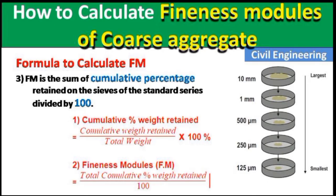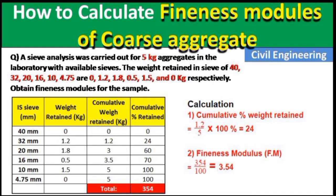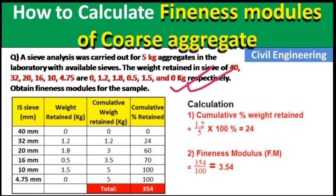Let us look at a numerical example for a clear understanding. The question states: a sieve analysis was carried out using 5 kg of aggregate in the laboratory. The available sieves are 40 mm, 32 mm, 20 mm, 16 mm, 10 mm, and 4.75 mm. The weights retained in each sieve were 0, 1.2, 1.8, 0.5, 1.5, and 0 kg respectively.